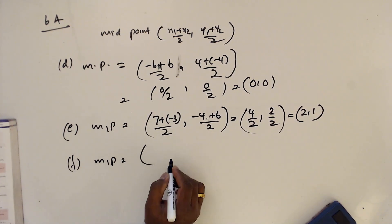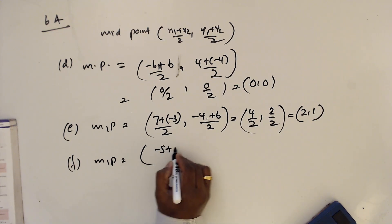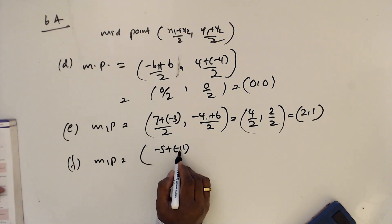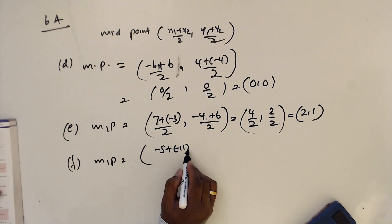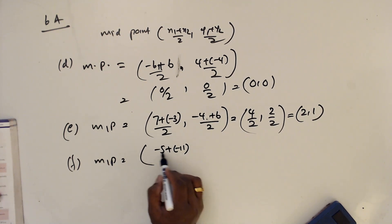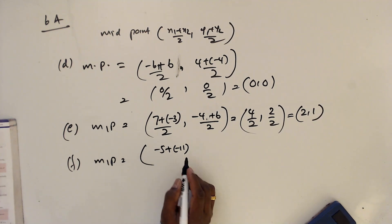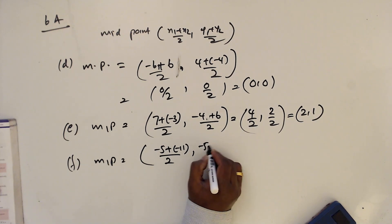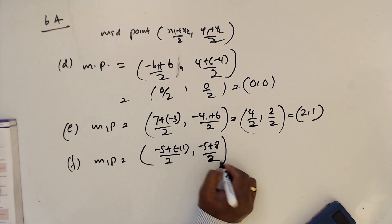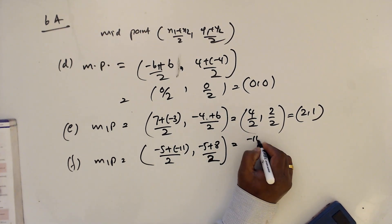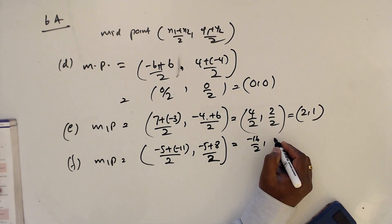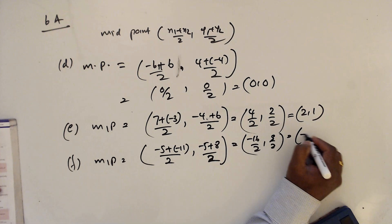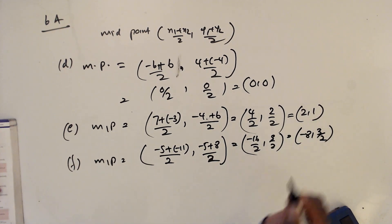Part f: midpoint uses minus 5 plus minus 11, and for the y-values minus 5 plus 8 divided by 2. Make sure when you write negative numbers you put a bracket — it is safer and avoids mistakes. So the x part is minus 16 divided by 2, and the y part is 3 divided by 2. The midpoint is (minus 8, 3 over 2).